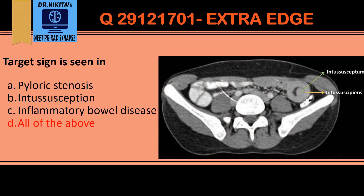The target sign is also seen in intussusception. On this contrast CT abdomen image — where vessels and bones appear white — one bowel goes inside another. The outer bowel is called the intussuscipient, as it is the recipient, and the inner one is the intussusceptor. The inner circle is formed by the intussusceptor and the outer circle by the intussuscipient, giving the target or donut sign.